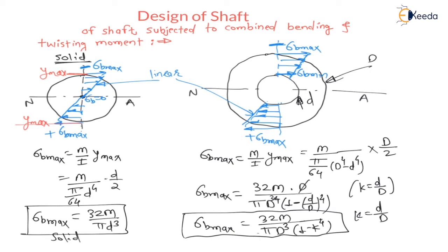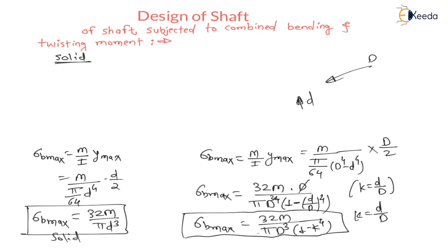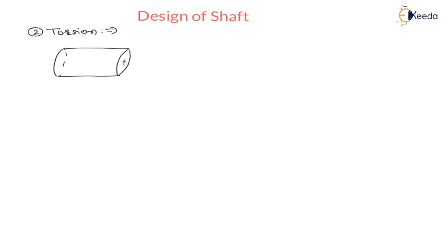Whenever a shaft is subjected to bending stresses, the maximum bending stress will be on the extreme fiber. Now, secondly, we will see when the shaft is subjected to torsion or twisting moment or torque. The torsional equation is T/J = τ/R = Gθ/L, where T is torque, J is polar moment of inertia, τ is torsional shear stress, R is the radius of shaft, G is shear modulus (modulus of rigidity), θ is angle of twist, and L is length of shaft.